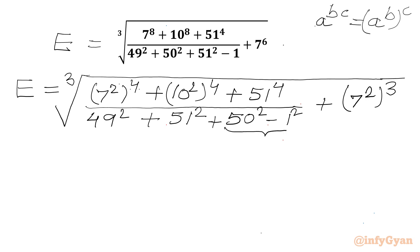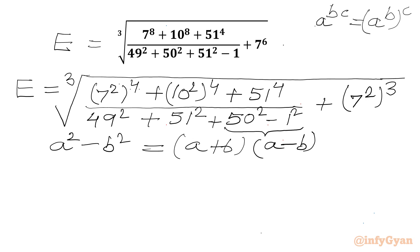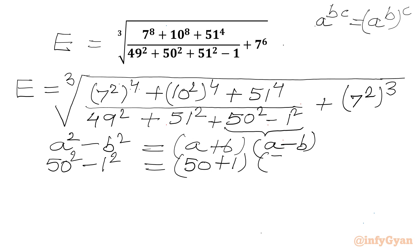Now here we can apply the difference of two squares formula. A squared minus B squared can be written as A plus B times A minus B. So 50 squared minus 1 squared will be equal to 50 plus 1 times 50 minus 1, which gives us 51 times 49.